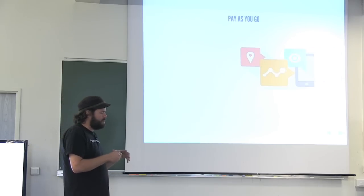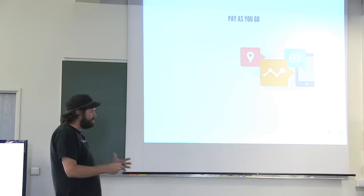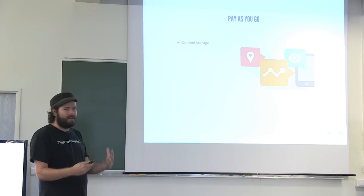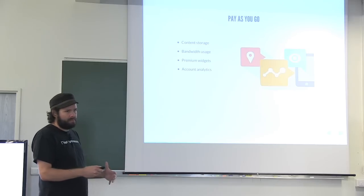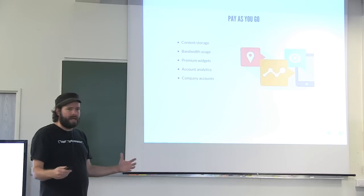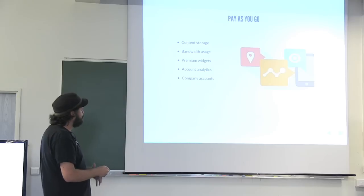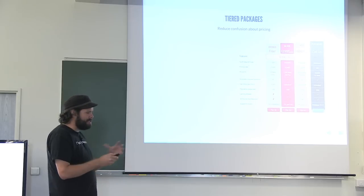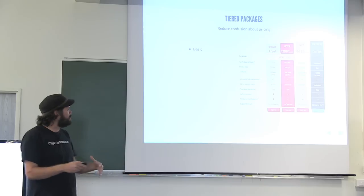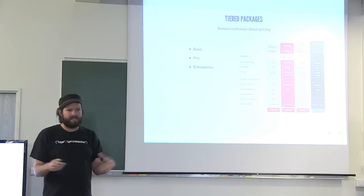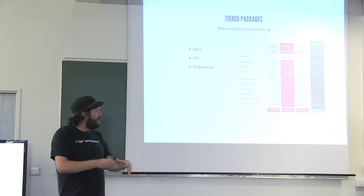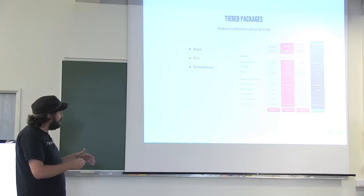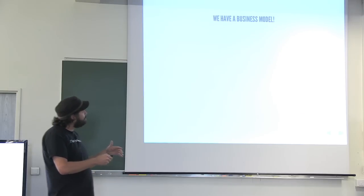I want people to only pay for what they use. Pay as they go. I want them to pay for things that I have to pay money for. Content storage, bandwidth, premium widgets, analytics that they can pay for and upsell to. Corporate accounts that aren't just individuals. Verified accounts, so we know which users are. But I don't want it to be too confusing. So I'm going to create a couple pricing tiers: a basic, a pro, and an enterprise, that really lump all these together but really have a pay as you go beyond that.